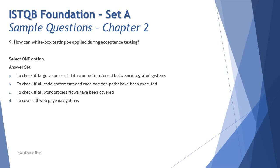The first question is: how can white box testing be applied during acceptance testing? At this point, don't focus on whether you remember acceptance testing — it's more about white box testing. Recall the comparison: white box is done at the back end, at the code level, whereas black box testing is done at the front end, just like a common user. Now start looking at the options.